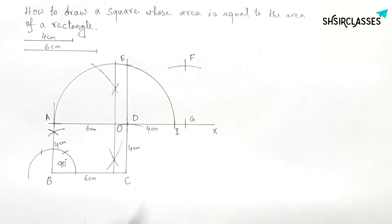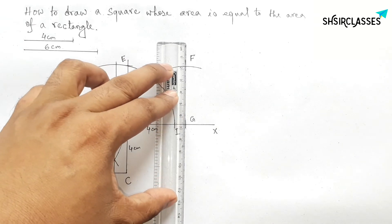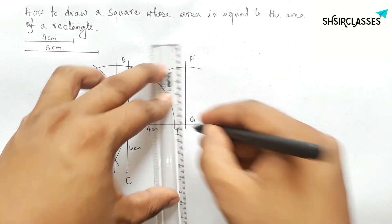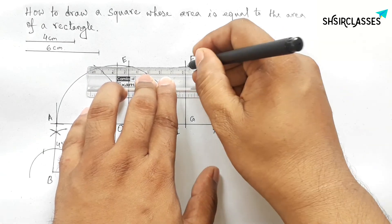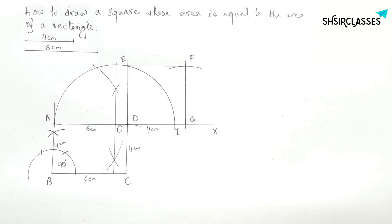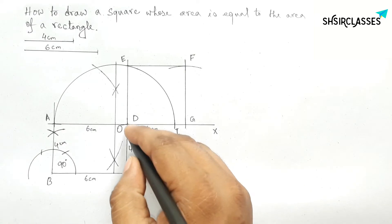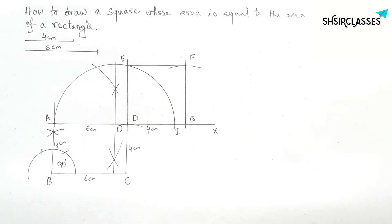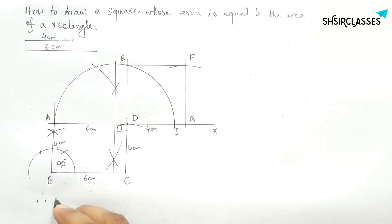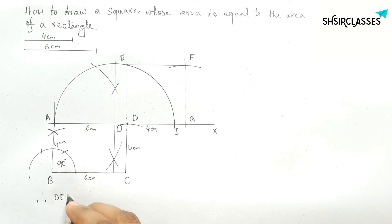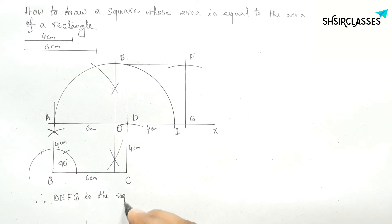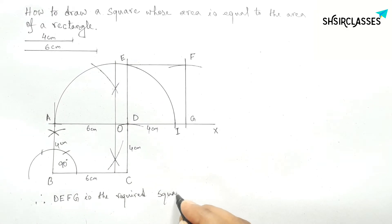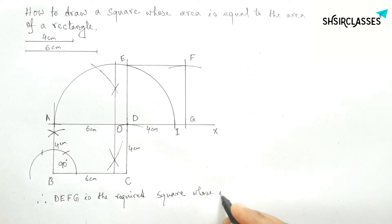Labeling here point F and point G. First joining side FG, then joining EF to complete the required square DEFG. So DEFG is equal to the rectangle ABCD.